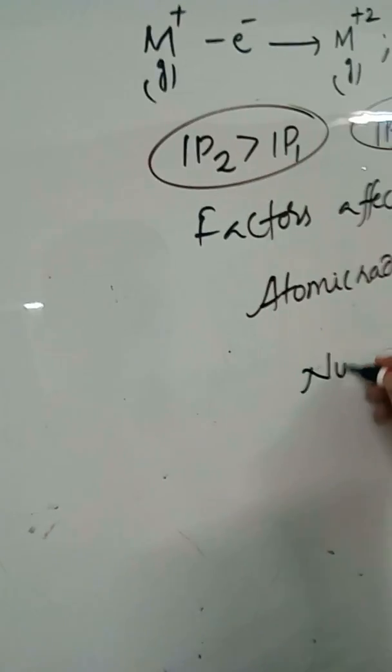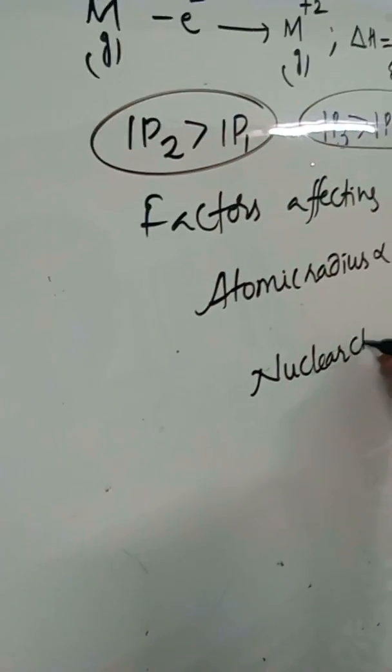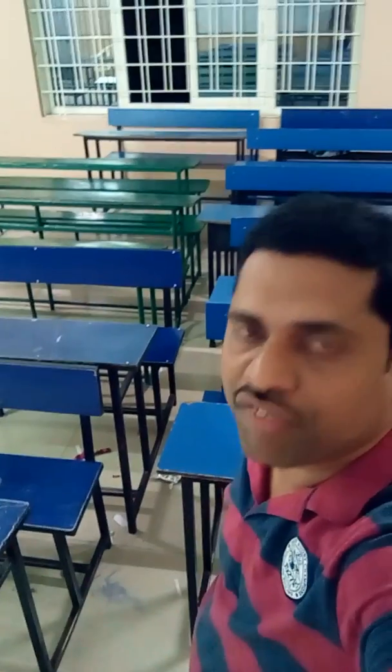The second factor is nuclear charge, which is directly proportional to ionization potential. For example, consider hydrogen and helium: helium has two protons while hydrogen has only one. From helium, it is more difficult to remove an electron because the greater positive charge attracts electrons much more strongly. So higher nuclear charge means higher ionization potential.